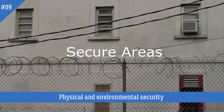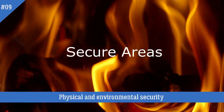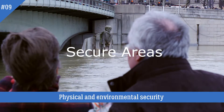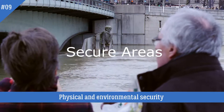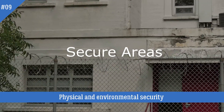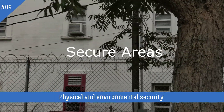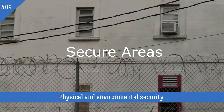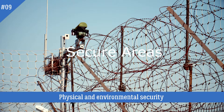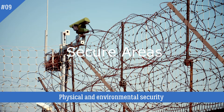Physical security for offices, rooms and facilities shall be designed and applied. Physical protection against damage from fire, flood, earthquake, explosion, civil unrest, and other forms of natural or man-made disaster shall be designed and applied. Guidelines for working in secure areas shall be designed and applied, and access points such as delivery and loading areas shall be controlled and, if possible, isolated from information processing facilities to avoid unauthorized access.